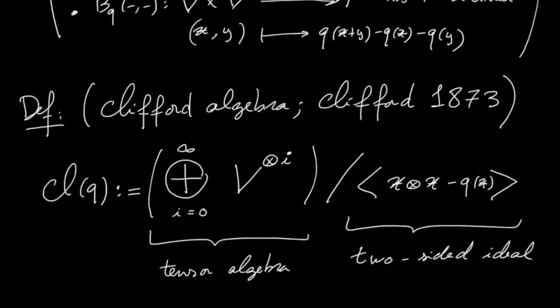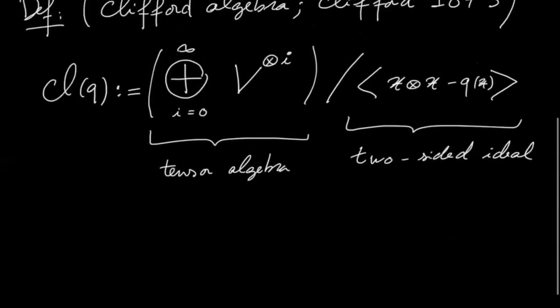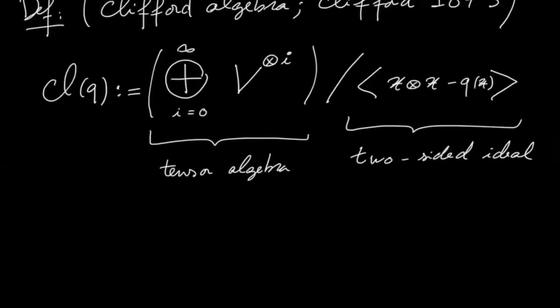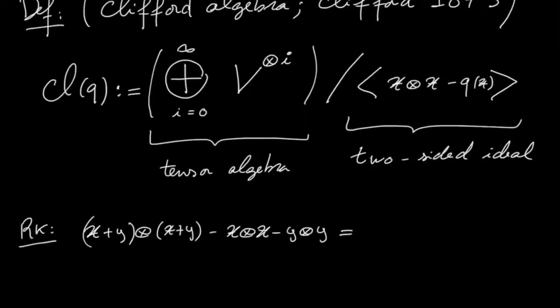So what's a remark, what are we doing when we are imposing this quotient? So let's make a very quick computation. So remark that X tensor Y plus Y tensor X minus X plus Y tensor X plus Y, so this is in the Clifford algebra, that's the same thing as q of X plus Y minus q of X minus q of Y.